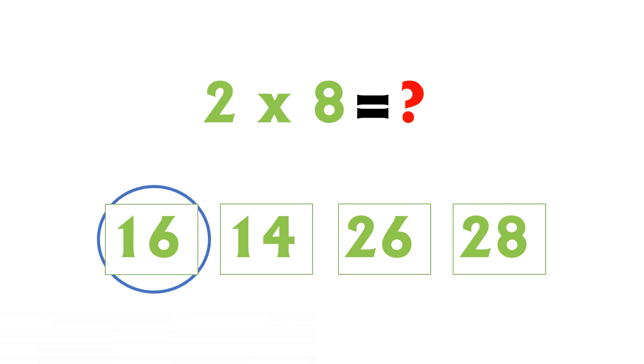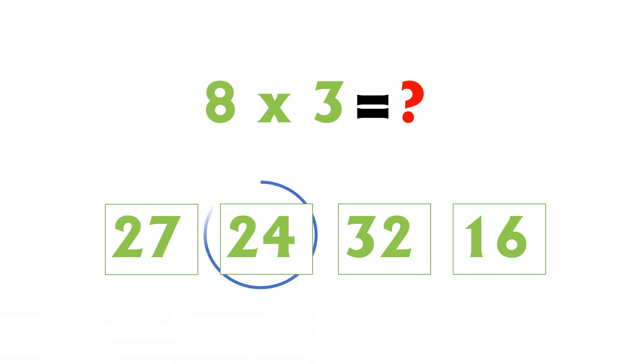2 eights are 16. 8 threes are... the correct answer is 24. 8 threes are 24.